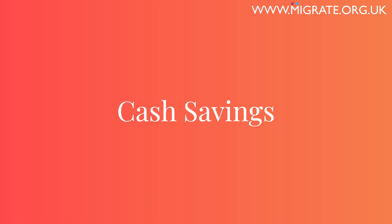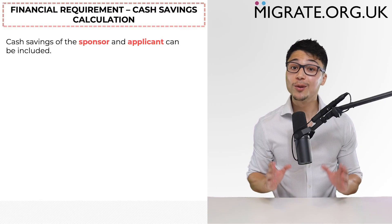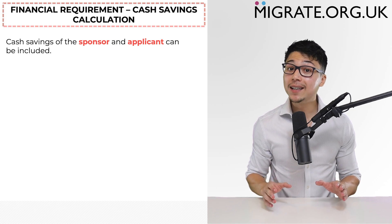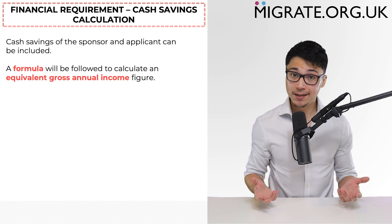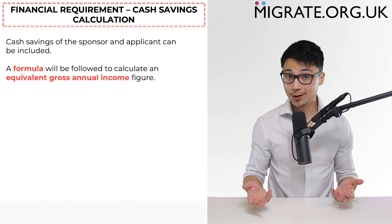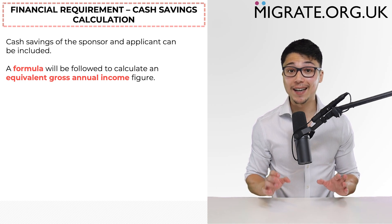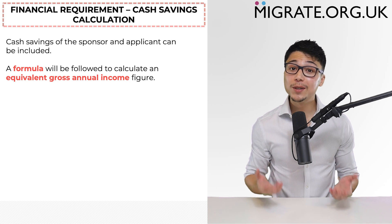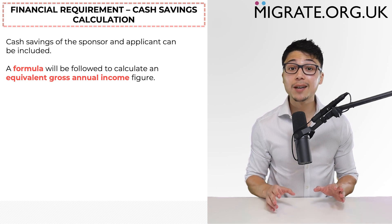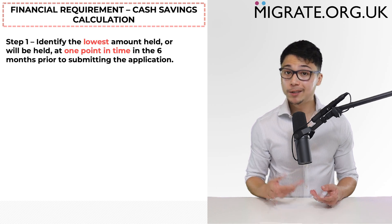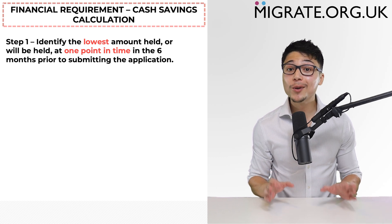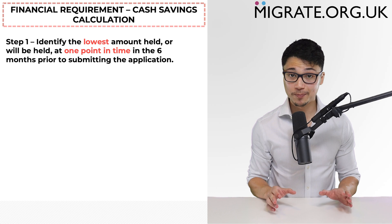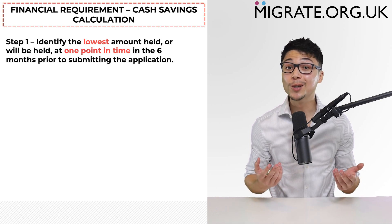Let's now discuss relying on cash savings for UK fiancé visa applications, which is included under category D. As is the case with all partner visa applications, the cash savings can be either those of the sponsor and/or applicant. If, as is more commonly the case, the minimum income threshold is £18,600, you will need more than £18,600 in cash savings. This is because there is a particular formula that you must follow to convert the cash savings into an equivalent gross annual income figure.